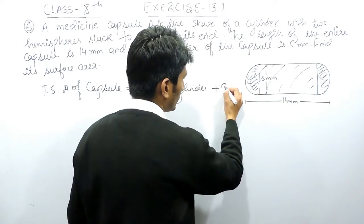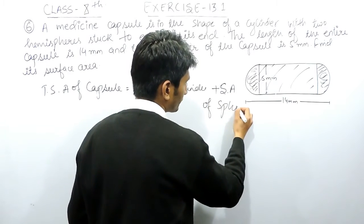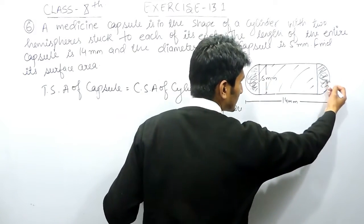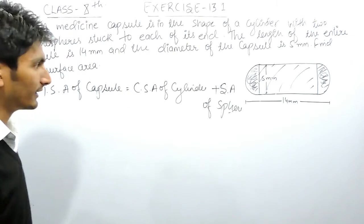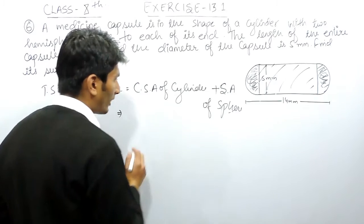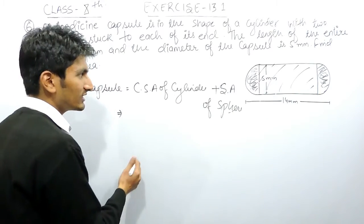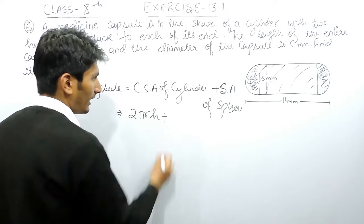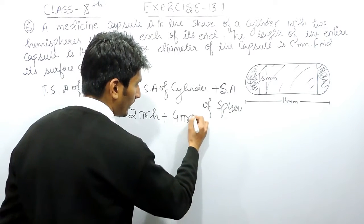So the surface area of the sphere — this hemisphere and that hemisphere, when attached, form a complete sphere. Now what you have to find is the curved surface area of the cylinder, which will be 2πrh, and the surface area of the sphere is 4πr².